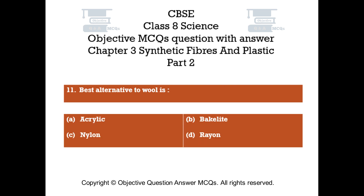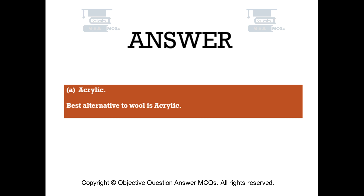Question number 11. Best alternative to wool is: Option A - acrylic, Option B - Bakelite, Option C - nylon, Option D - rayon. The right answer is Option A, acrylic. The best alternative to wool is acrylic.